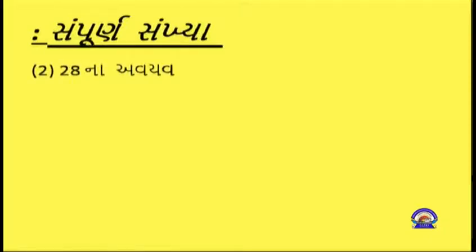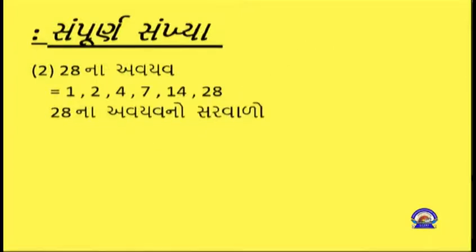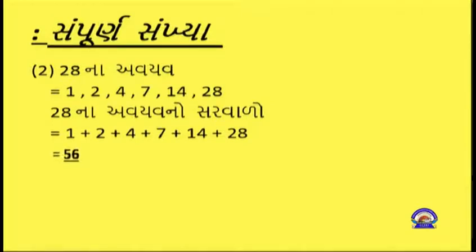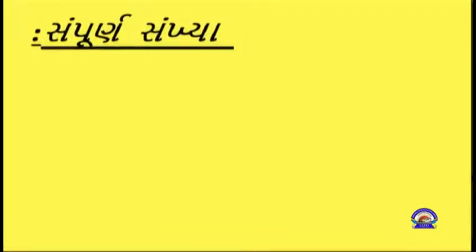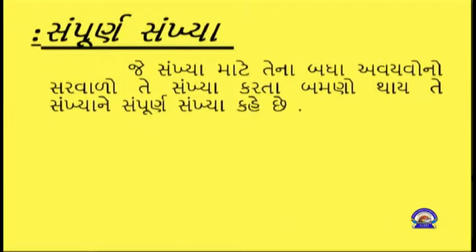28 ના અવ્યયો: 1, 2, 4, 7, 14, 28. 28 ના અવ્યયોનો સરવાળો 1+2+4+7+14+28 = 56, જે 28 ના બમણા છે. જે સંખ્યા માટે તેના બધા અવ્યયોનો સરવાળો તે સંખ્યા કરતાં બમણો થાય, તે સંખ્યાને સંપૂર્ણ સંખ્યા કહે છે.